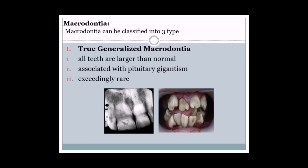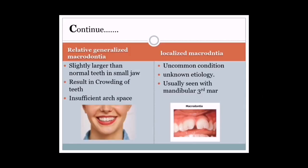True generalized macrodontia is associated with pituitary gigantism and other rare conditions. A picture and X-ray graph are shown demonstrating true generalized macrodontia. Number two: relative generalized macrodontia, in which teeth are slightly larger than normal in a small jaw, resulting in crowding of the teeth due to insufficient arch space.